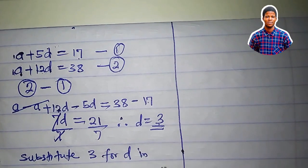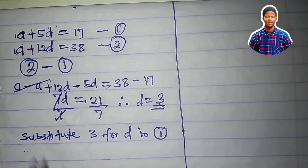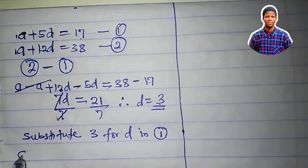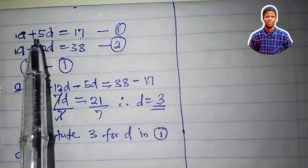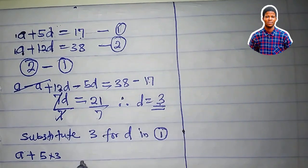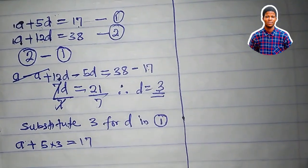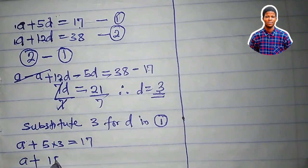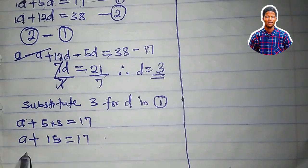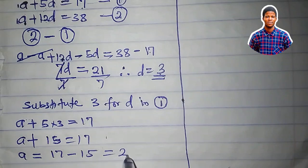So let me choose equation 1. So anywhere I see d here in equation 1, I'm going to write 3. So we have A plus 5 times 3, 5 times 3, equal to 17. So A plus 15 equal to 17. If I collect like terms, 15 will cross. I have A equal to 17 minus 15, which is equal to 2.